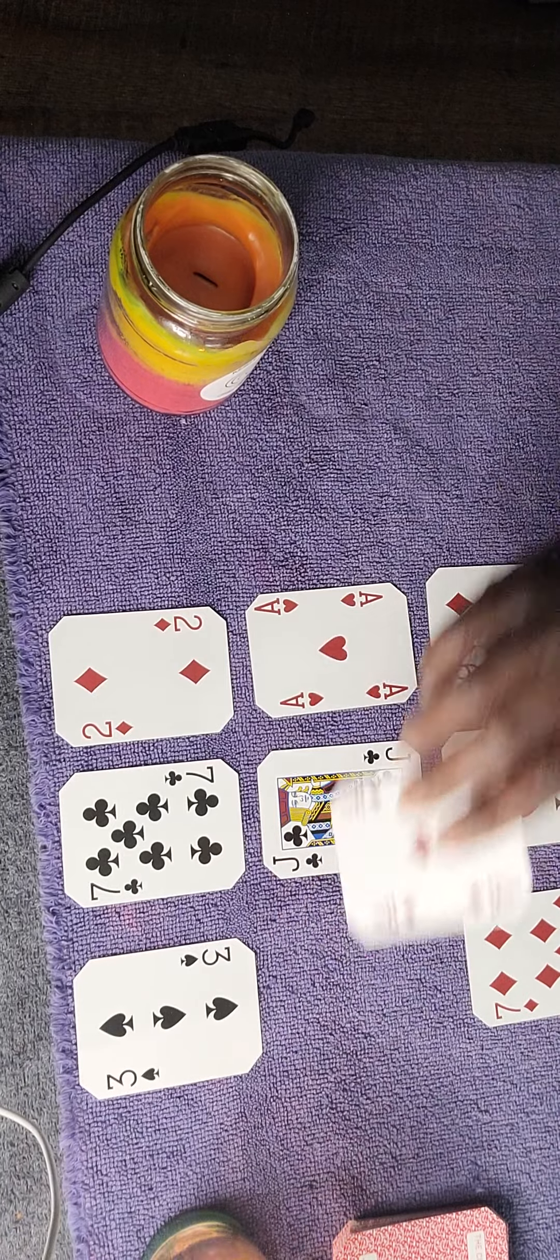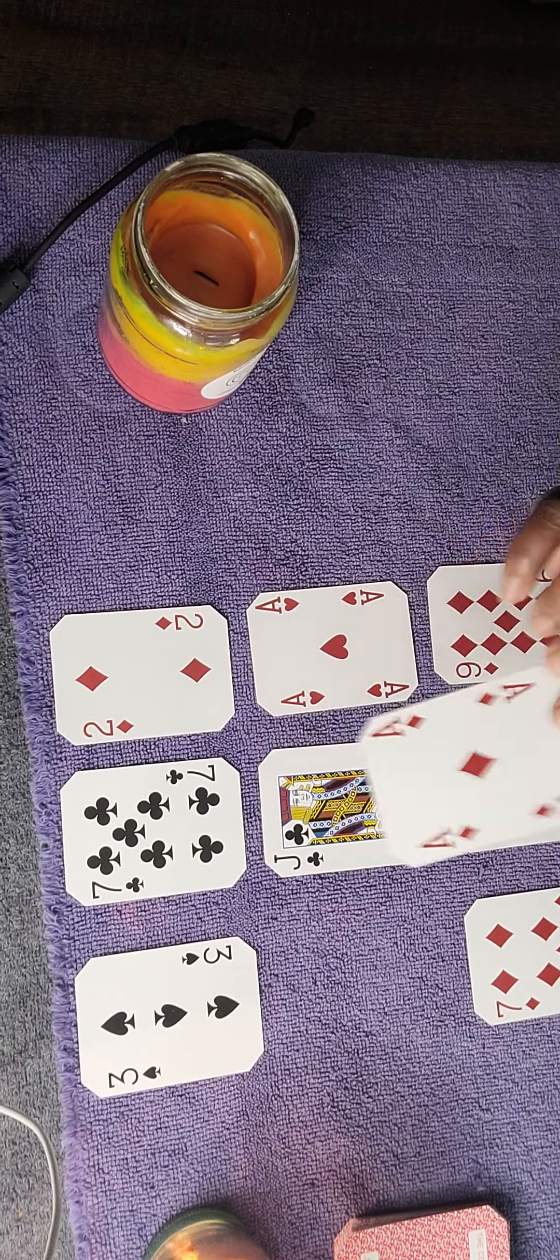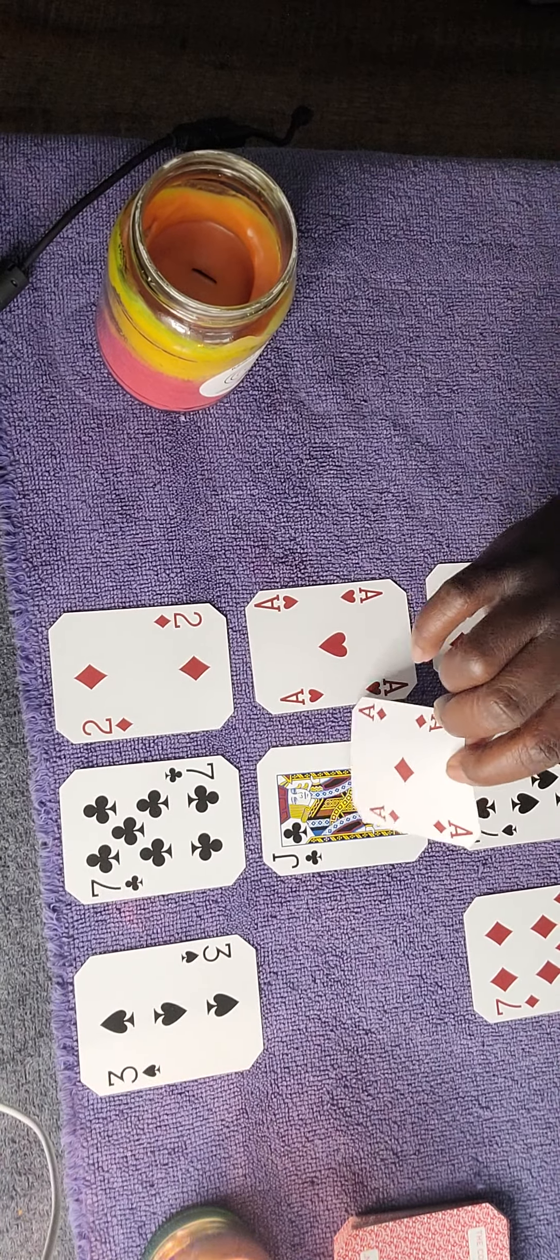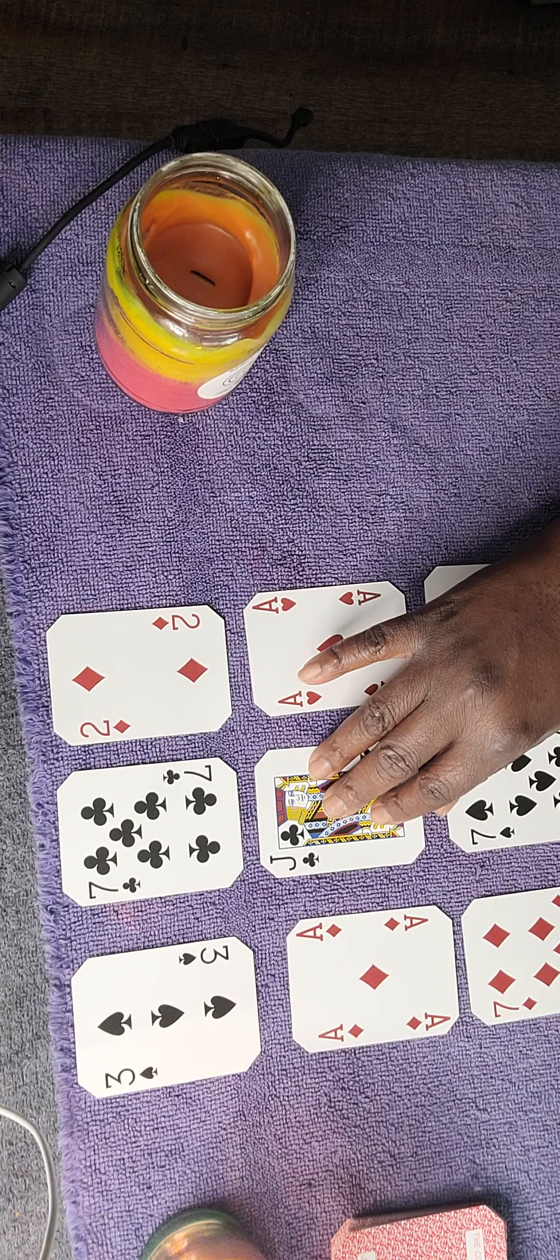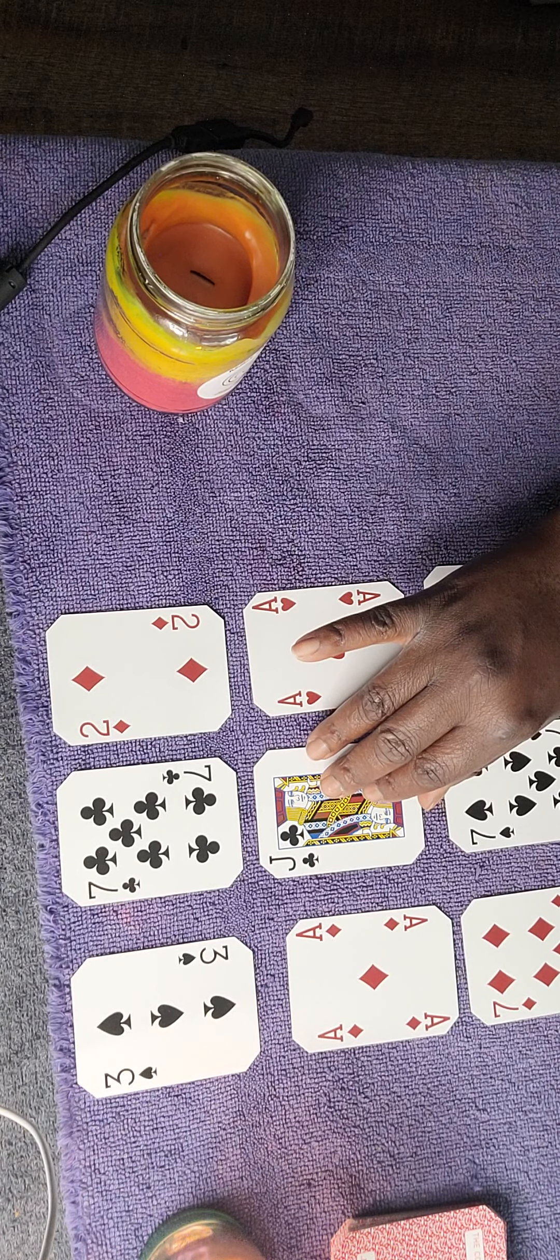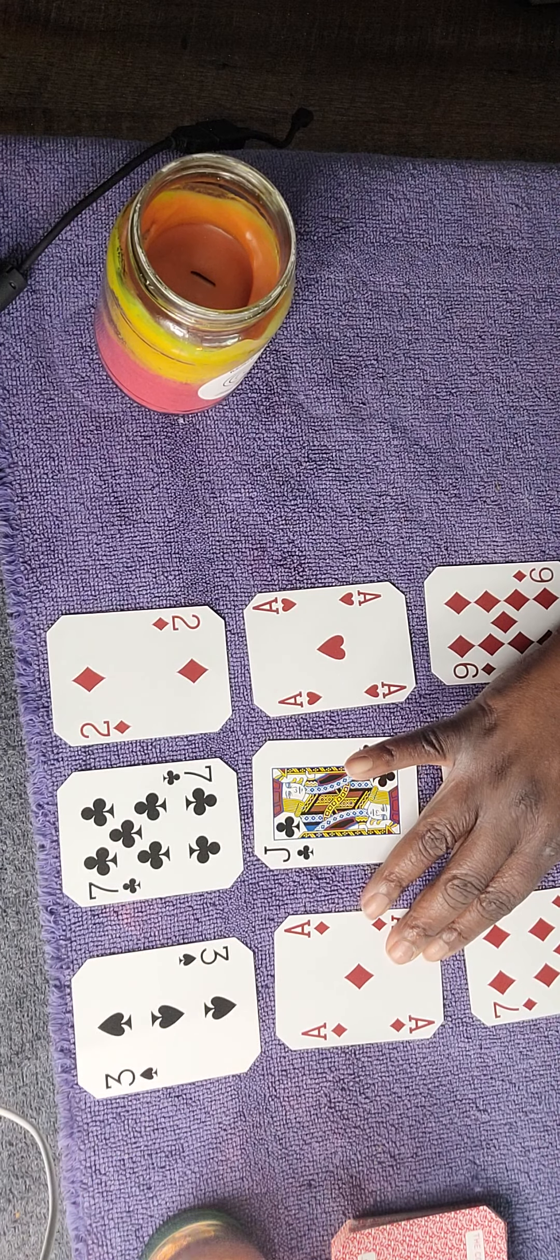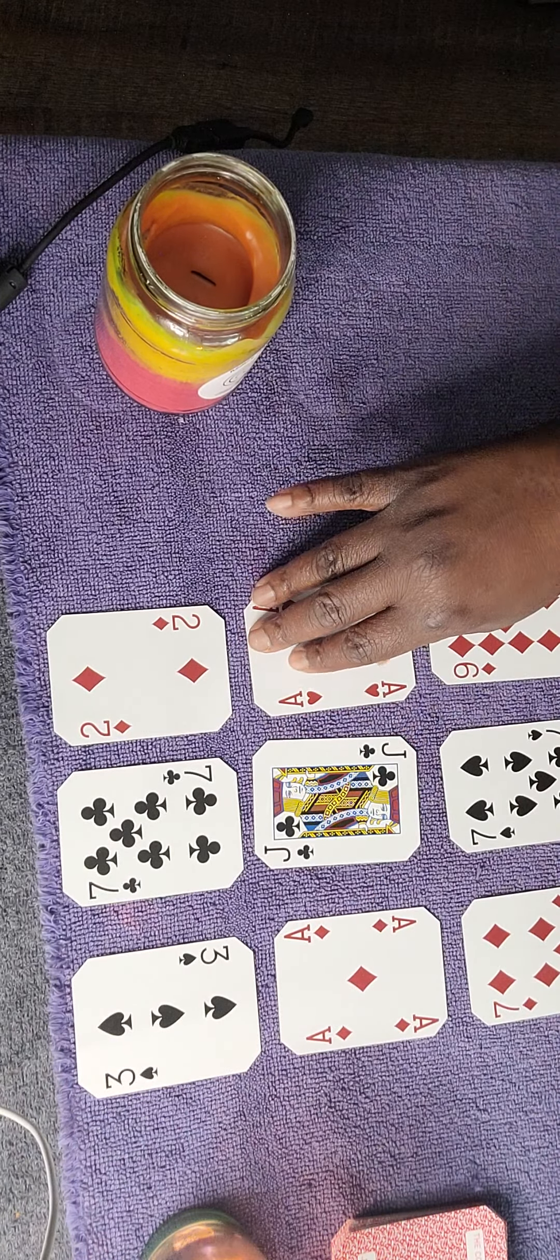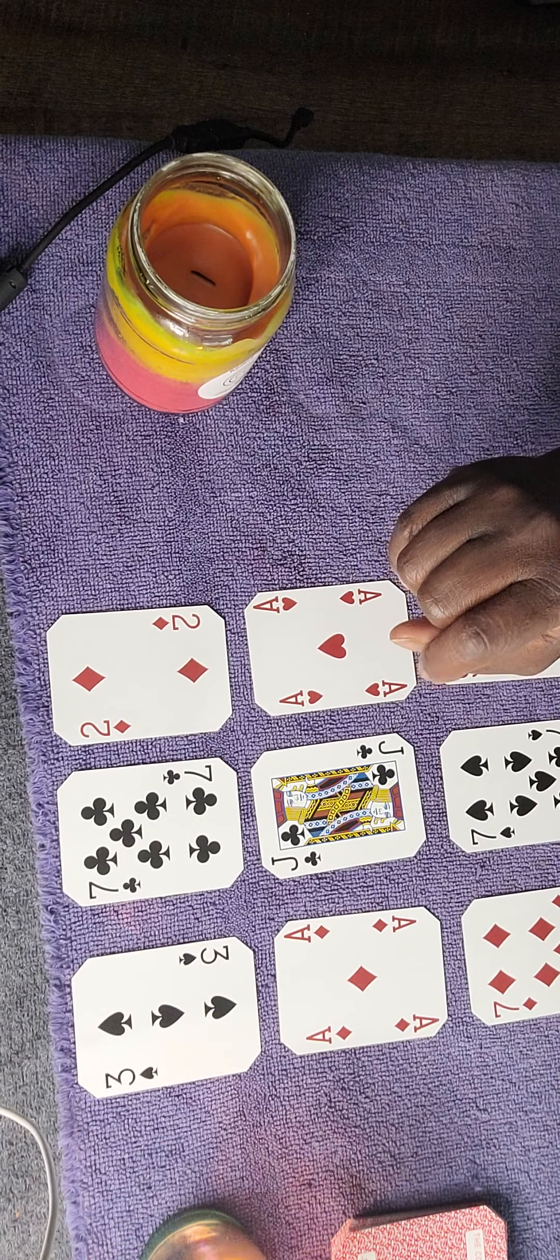You also have here the Ace of Diamonds, which is you're getting a new source of income coming in. Which clarifies this Jack here. You're moving on and you're getting a new source of income. It's going to be at a better place. You can begin to heal from the trauma of the last job.